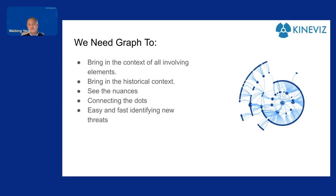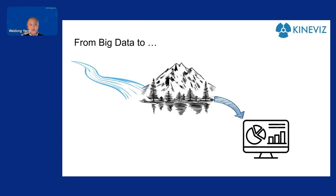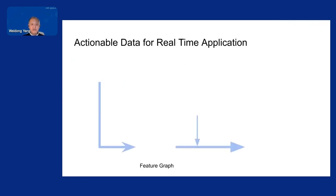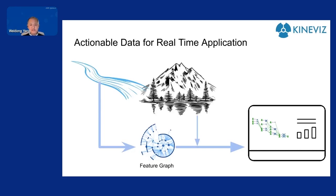If we look at the traditional approach, you have big data flowing into the data lake and it goes to a BI system to raise the alert. What we really need is to add this component — I call it the feature graph.